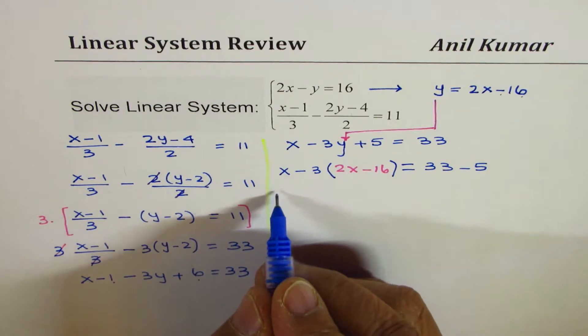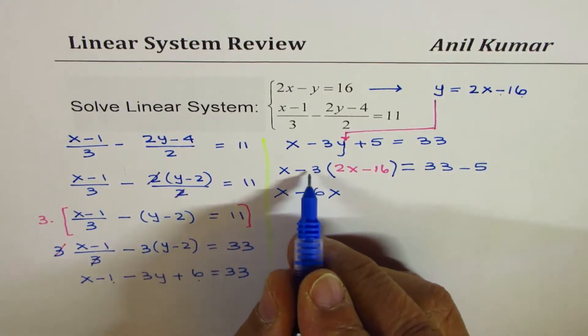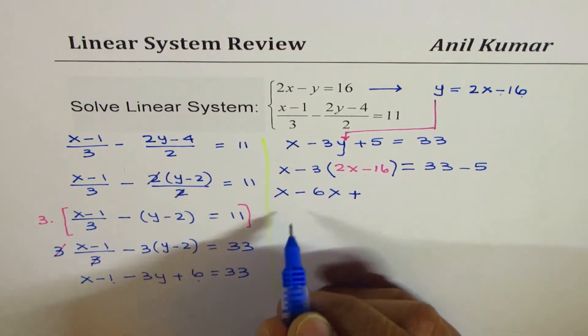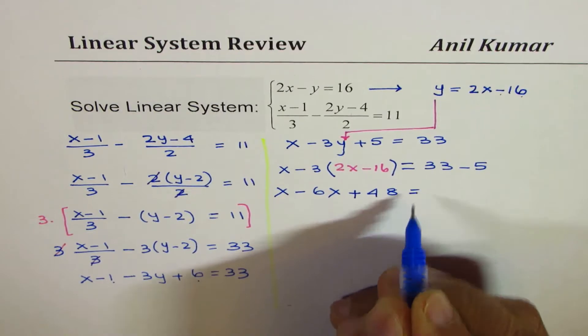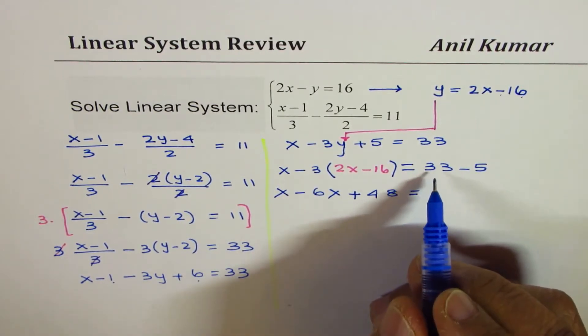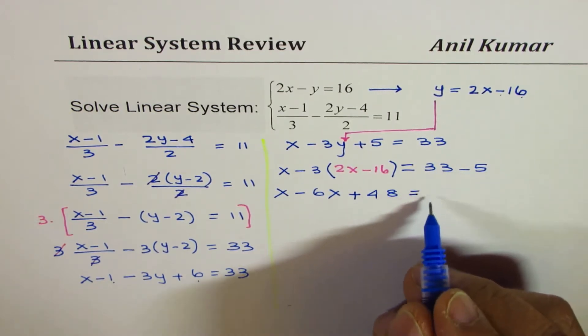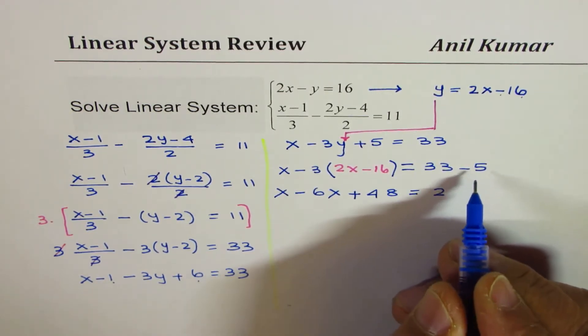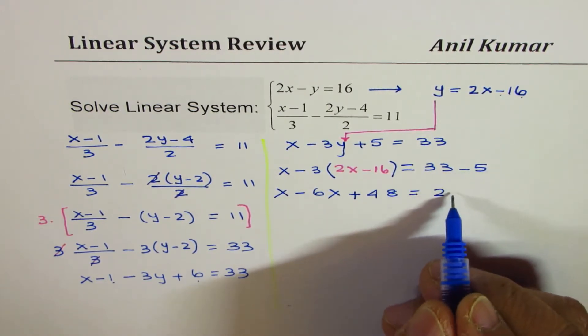Let's expand. We get x minus 6x and minus minus becomes plus 16 times 3 is 48 equals 33 minus 5. So that is 28. When you take 5 away from 33, you get 28.